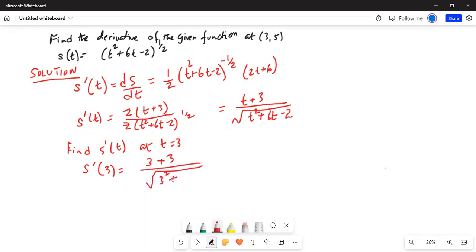s'(3) = (3+3) / √(3² + 6×3 - 2), which is 6 / √(9 + 18 - 2).